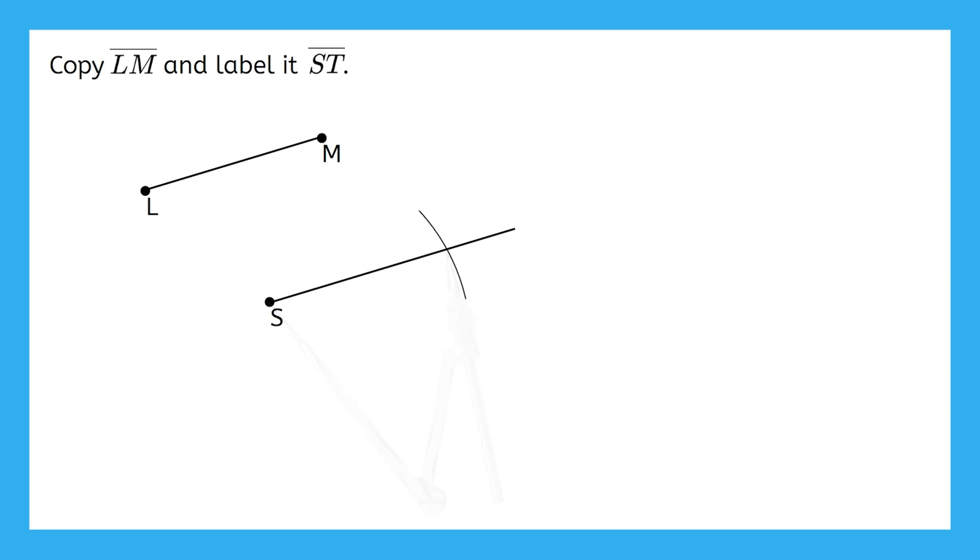Place point T where the arc you just drew meets up with the line segment. If you'd like to lightly erase the excess line segment that didn't get used and the arc, you certainly can, but it's best not to completely erase these markings because they are good evidence that we used a compass and straightedge to make our construction.